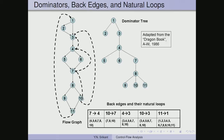Now consider the back edge 10 to 7. We add 7 to the loop as header, then insert 10 and push it onto the stack. When we pop 10, its predecessor is 8, which is added and pushed. For 8, no other nodes need to be added. So the nodes in the loop corresponding to back edge 10 to 7 are: {7, 8, 10}.